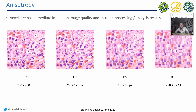Anisotropic voxels are not bad in general, but as soon as the factor becomes high, it becomes complicated to process these images. If the number of pixels in one direction becomes too small relative to the size of the objects we are looking at, then we can't differentiate objects anymore.